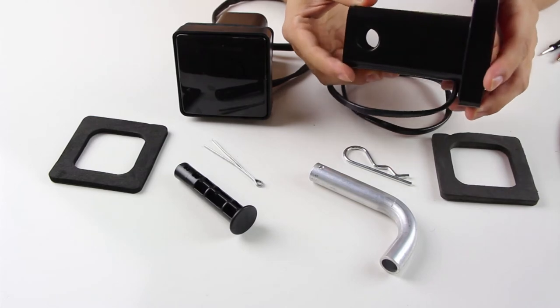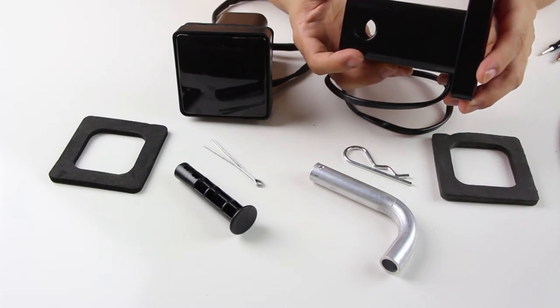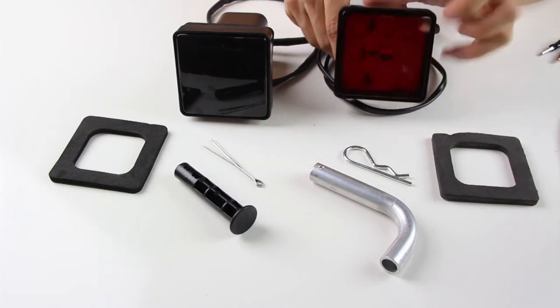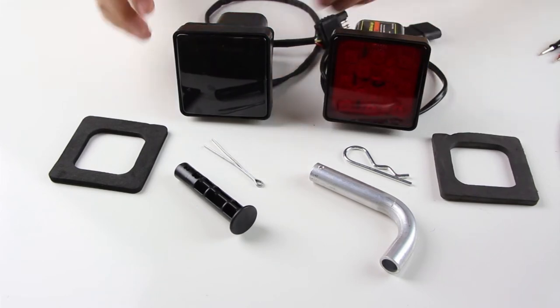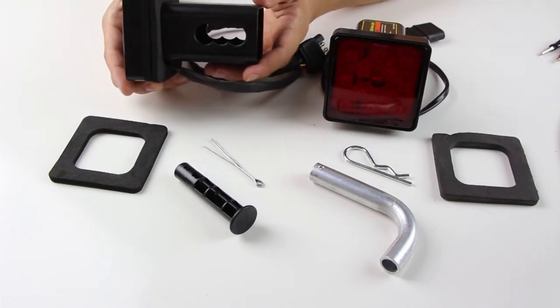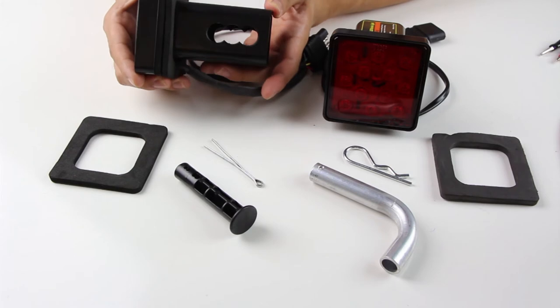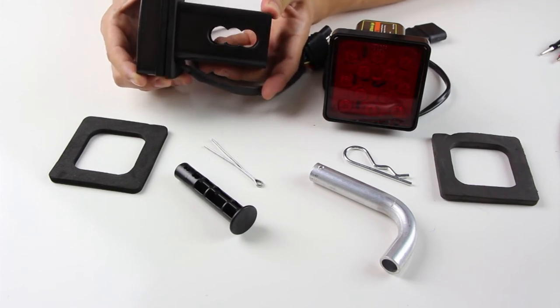Our original brake light only has one hole to mount on, so sometimes the brake light would stick out too far. Our new model has three holes to mount on, giving you the flexibility of how far from or close to your tow hitch you want to install it.